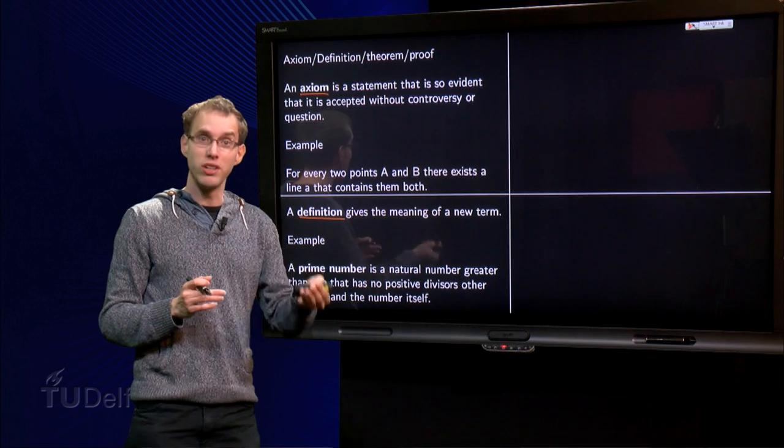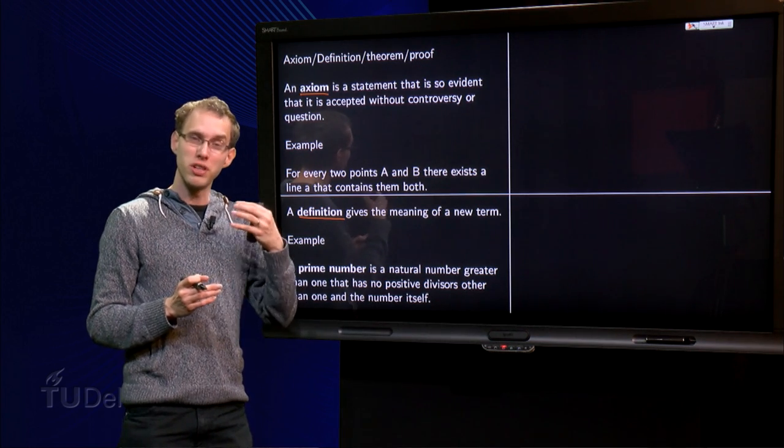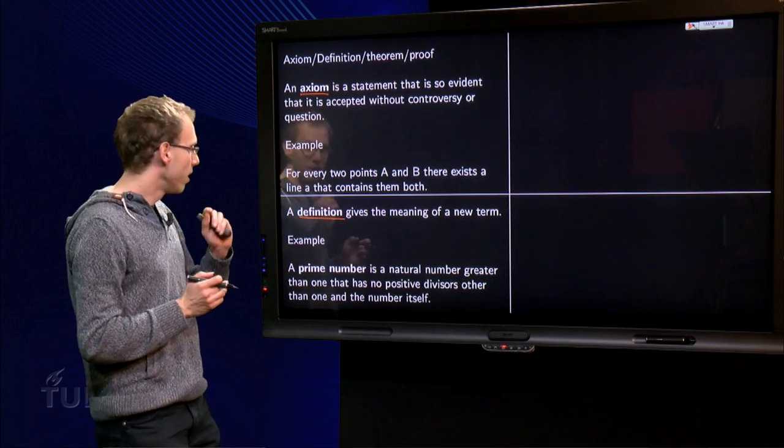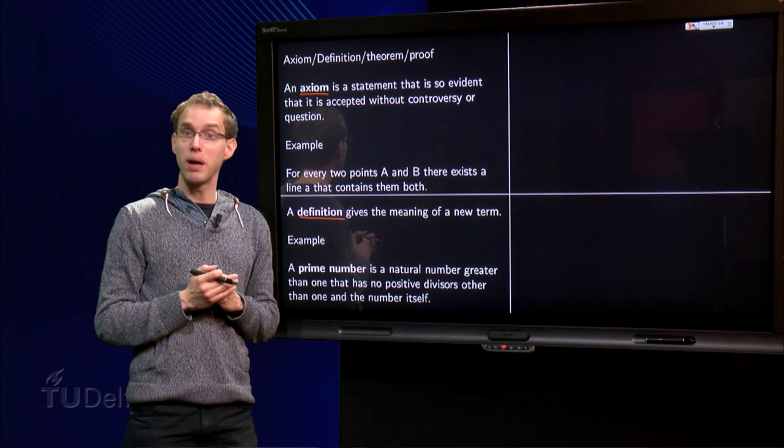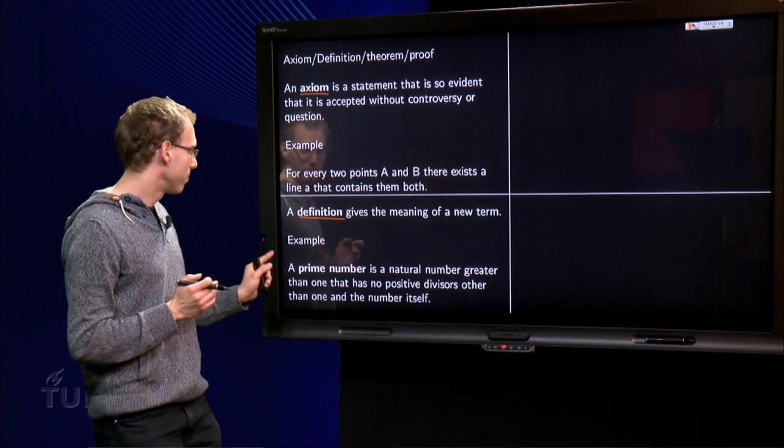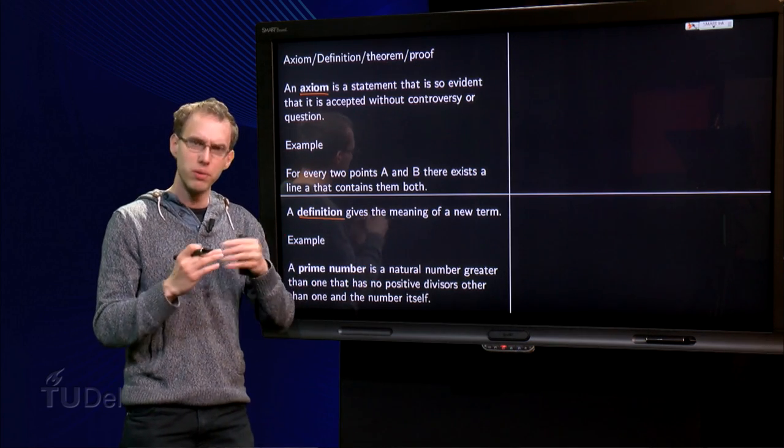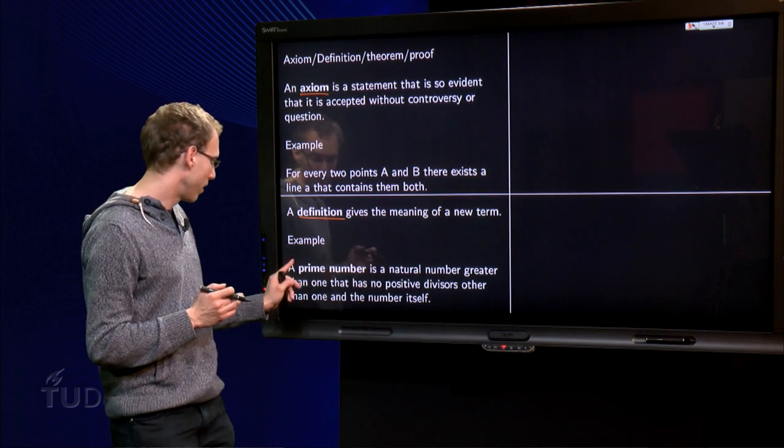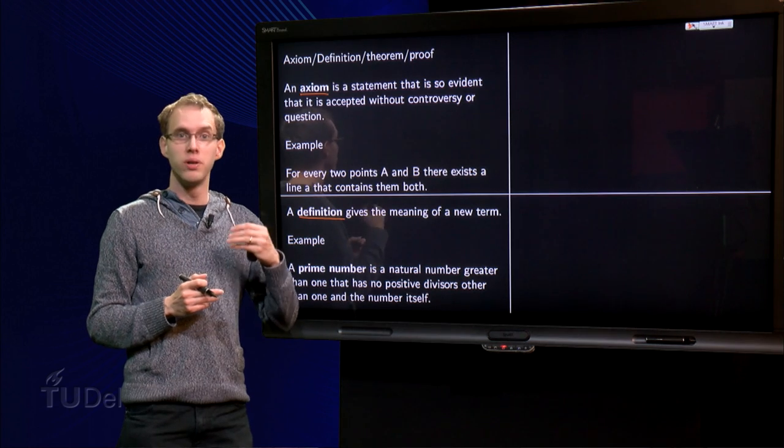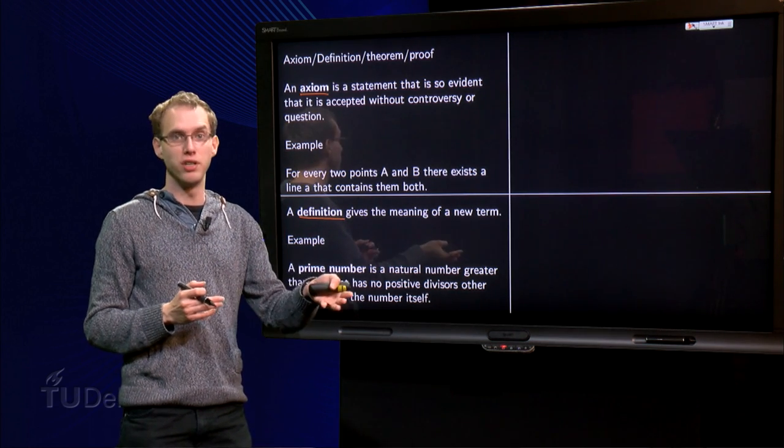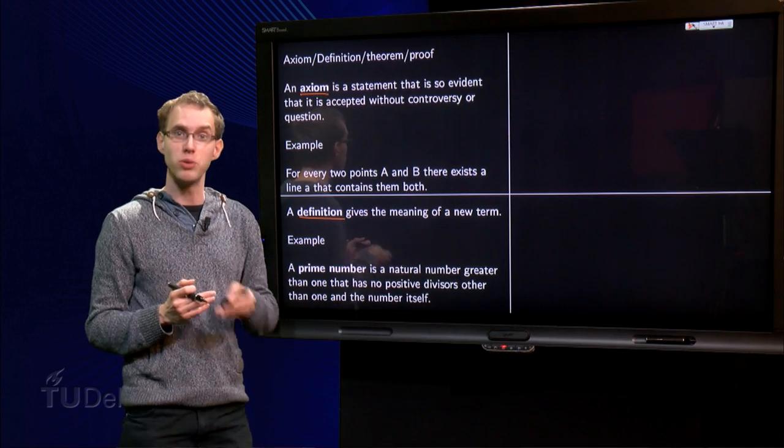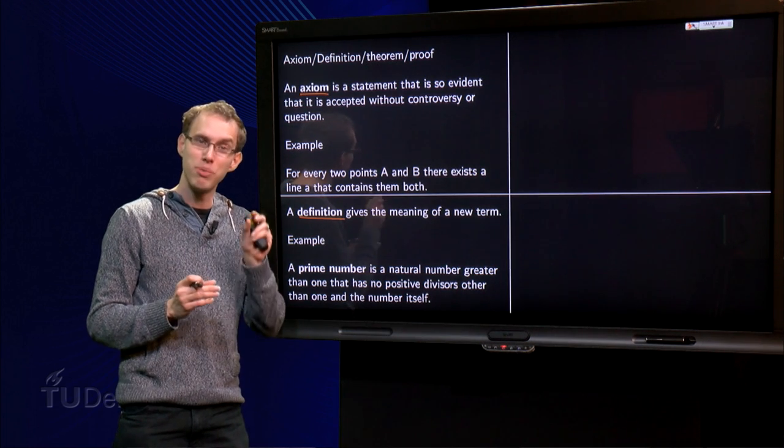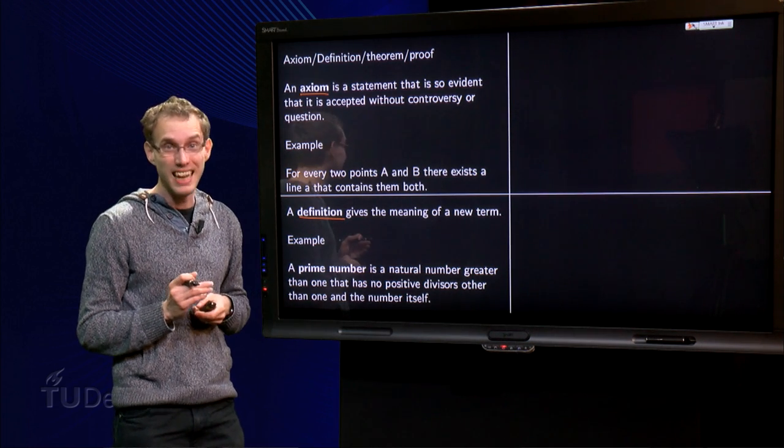It's wise to study those definitions very well, to understand very well what they mean. I took an easy one here as an example. A prime number is a natural number greater than 1 that has no positive divisors other than 1 and the number itself. So, 2 and 3 are prime numbers, but 4 is not, because 4 can be divided by 2. A definition is quite long here, because you have to be very precise what you exactly mean.